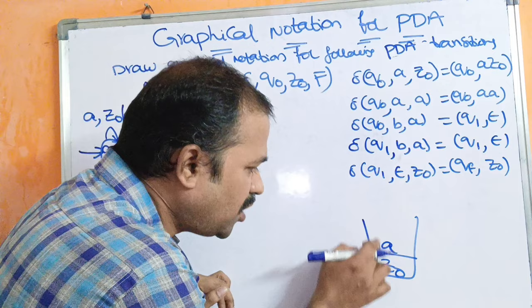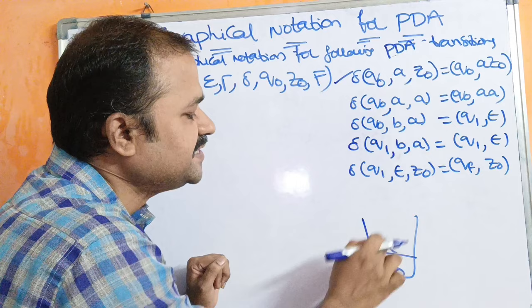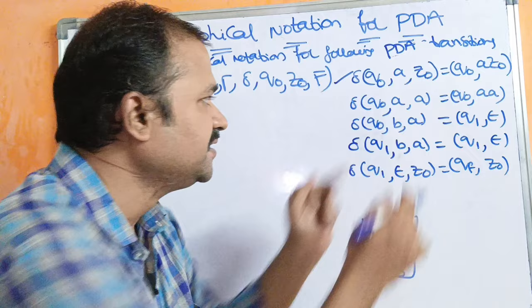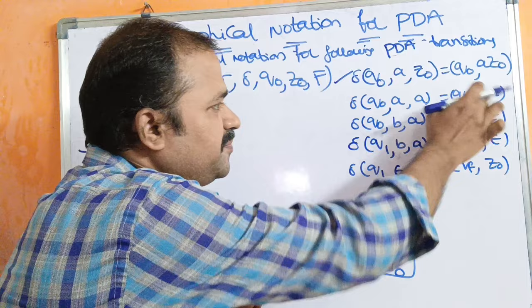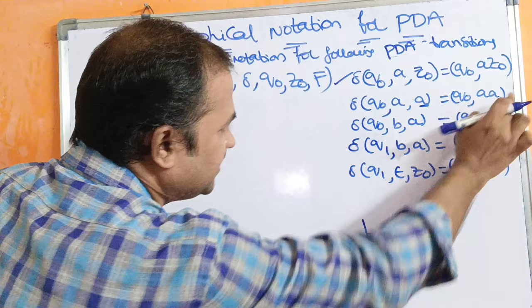The second transition function is Q0, A, A. That means if the input symbol is A and the stack's topmost symbol is A, then we need to perform the push operation. This A will be pushed down into the stack, so the stack's A will be replaced by A A. So this A will be replaced with double A. Two transition functions are now done.